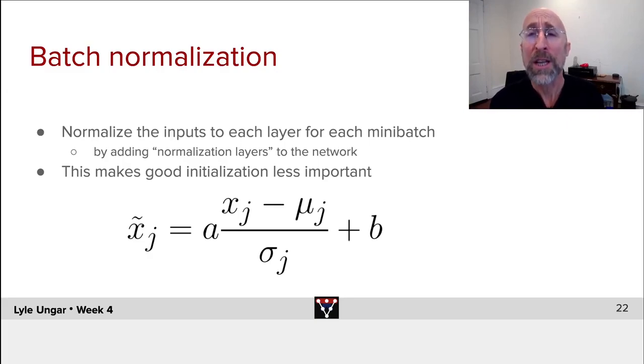This normalization then makes gradient descent more stable. It means there's less zigging and zagging as the machine learns.